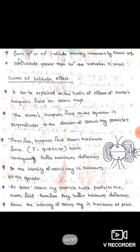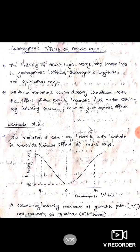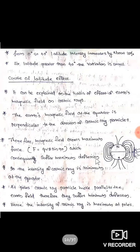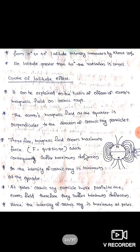From the graph, from zero degrees to 40 degrees latitude, the intensity increases by about 10%. For latitude greater than 40 degrees, the variation is small — the gradient becomes lower.